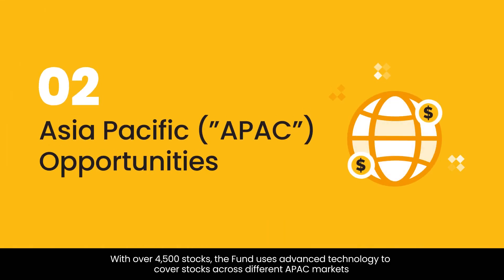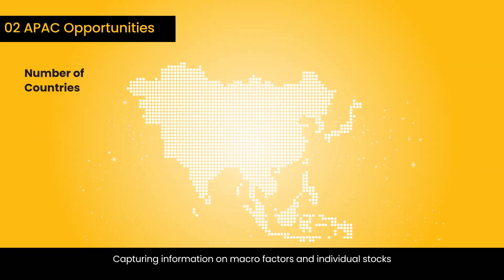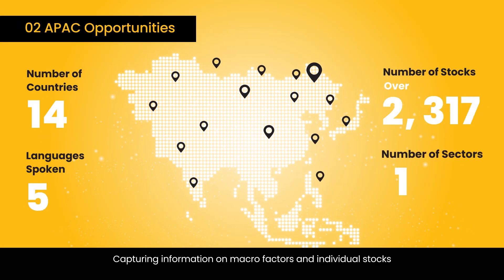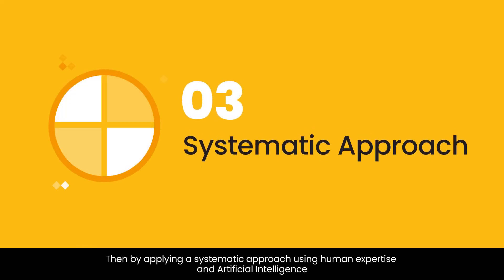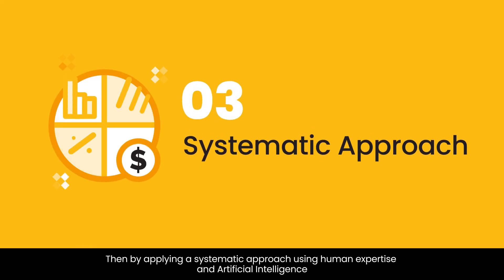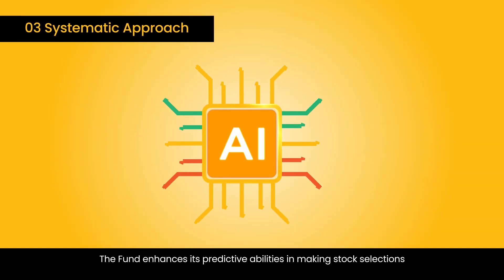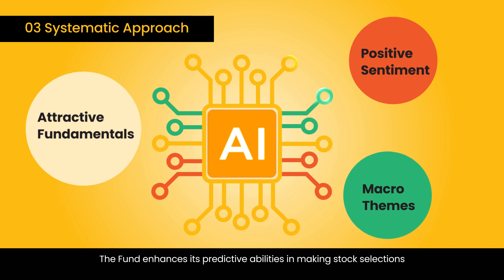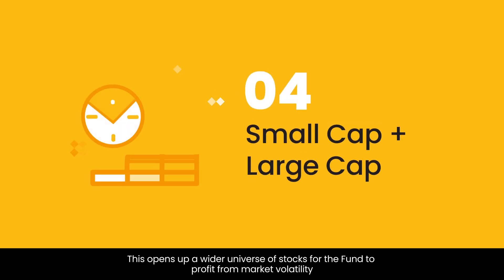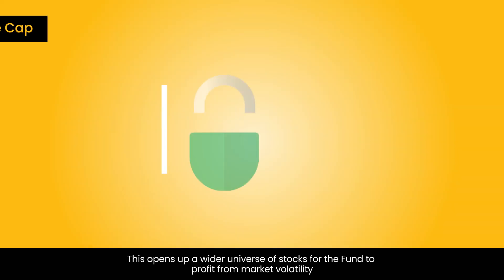With over 4,500 stocks, the fund uses advanced technology to cover stocks across different APAC markets, capturing information on macro factors and individual stocks. By applying a systematic approach using human expertise and artificial intelligence, the fund enhances its predictive abilities in making stock selections, opening up a wider universe of stocks for the fund to profit from market volatility.